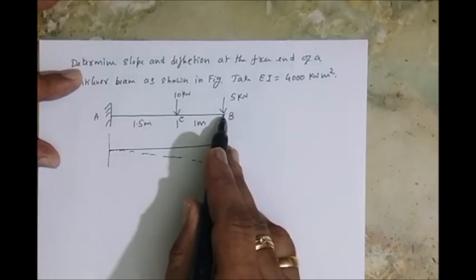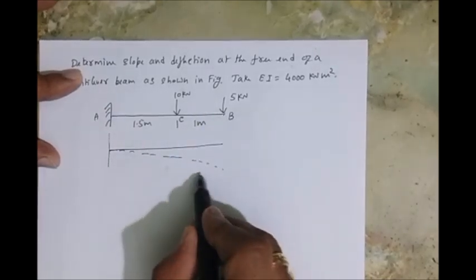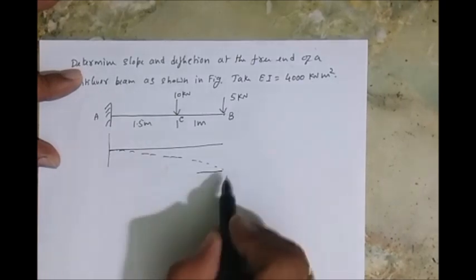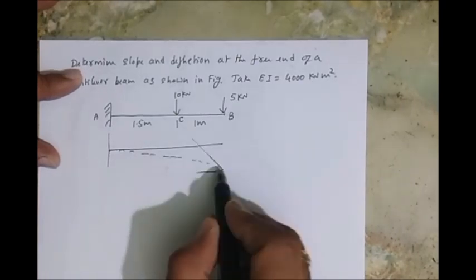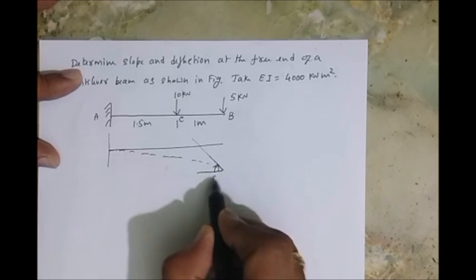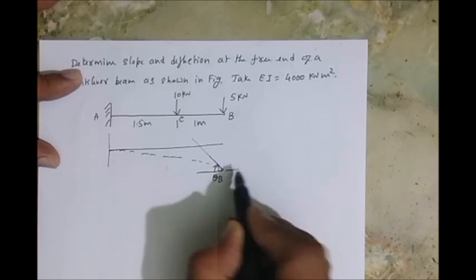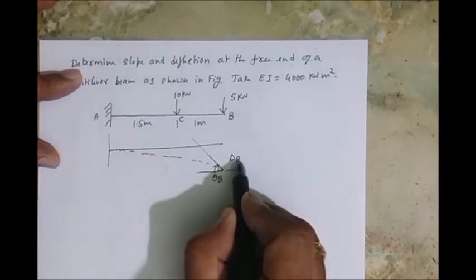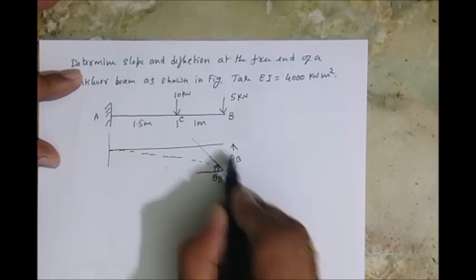So it's drawn now. I'll draw the tangent from here, from point B. This is what is theta B, and this is what is delta B.